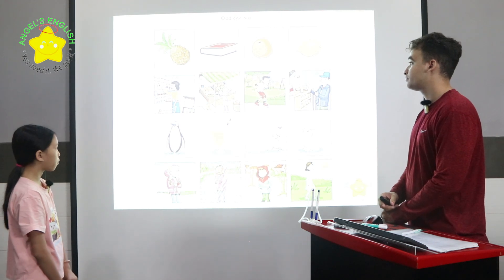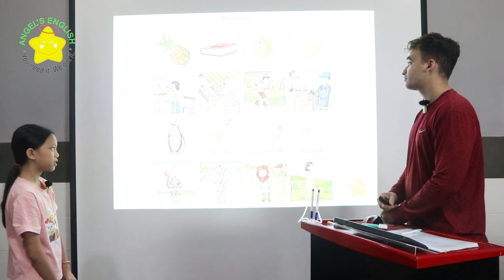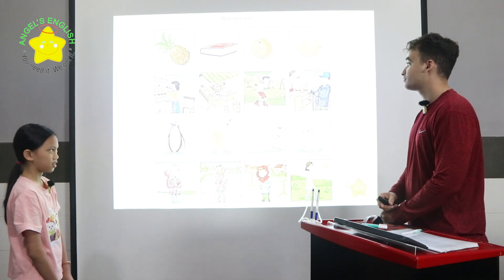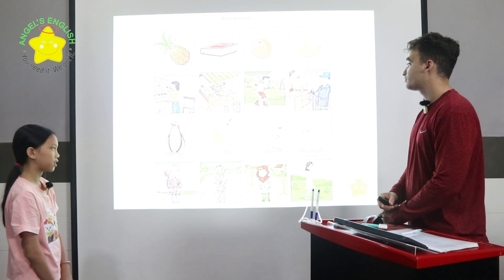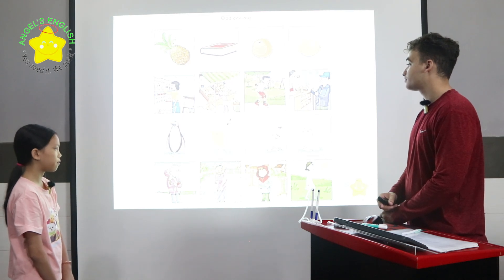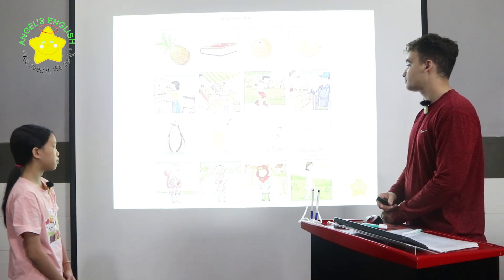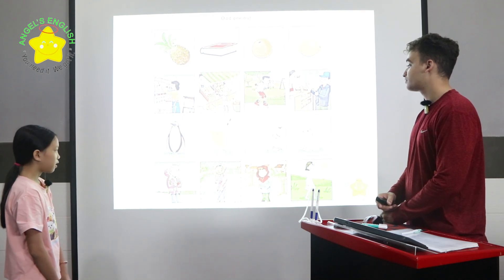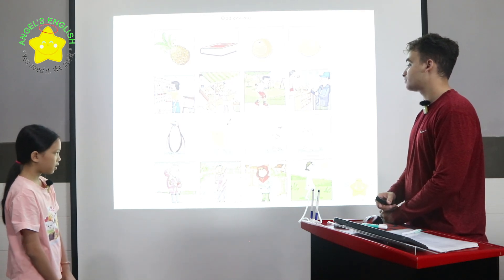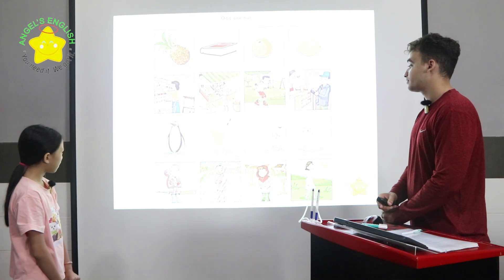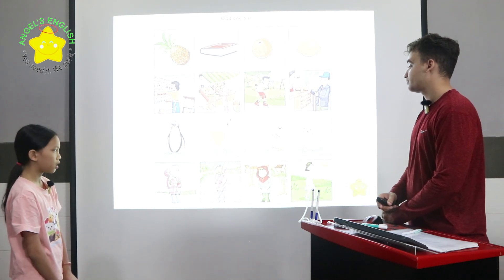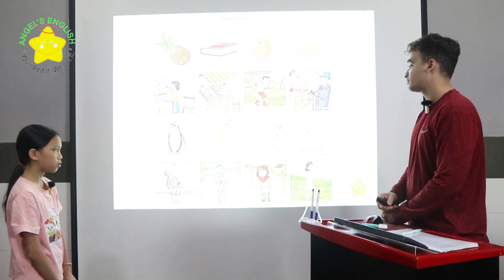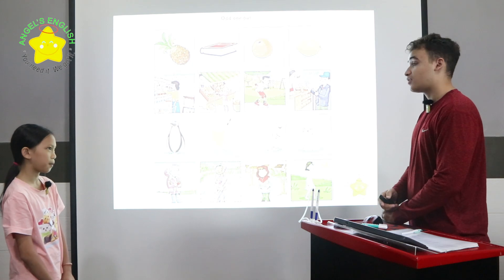In row three, picture two is different because pictures one, three, and four, they are animals. In row four, picture four is different because pictures one, two, and three, they are cold.